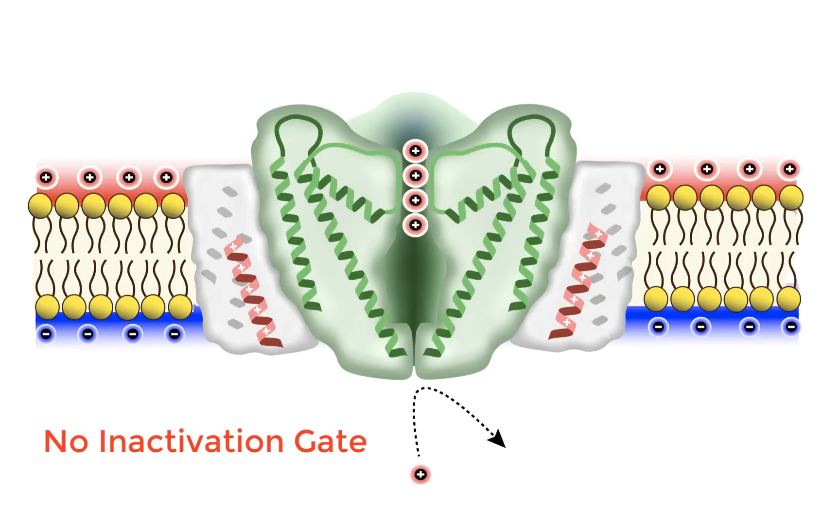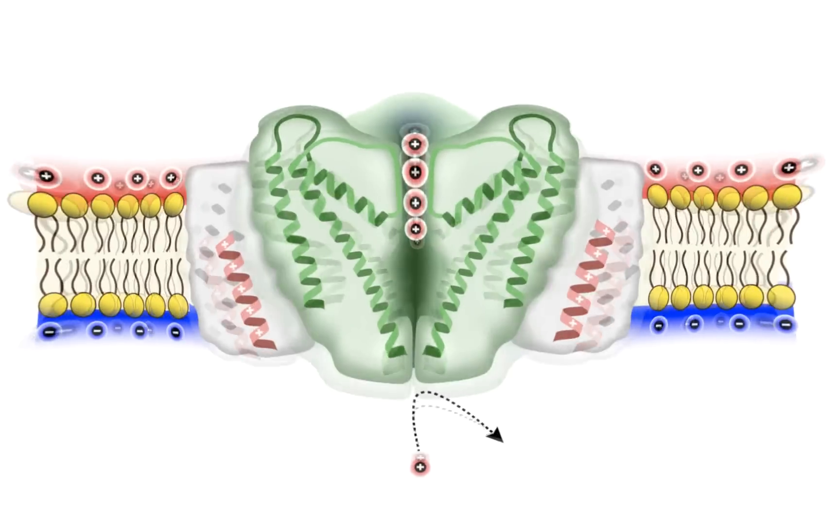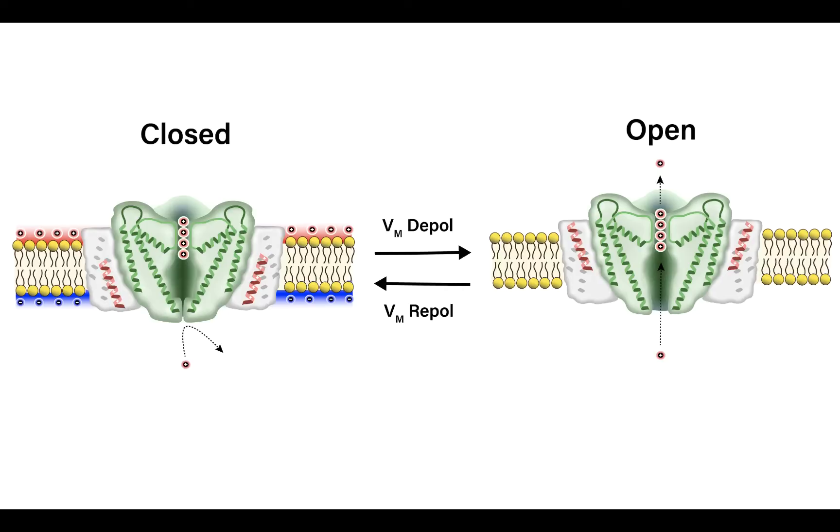Because they lack this inactivation gate, their activation cycle is a little simpler. First of all, the voltage-gated potassium channels exist in either the closed state or the open state.